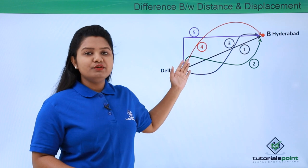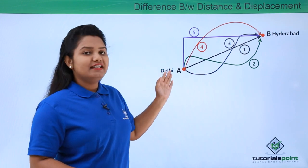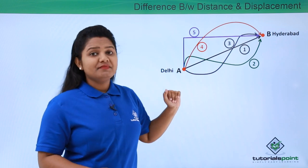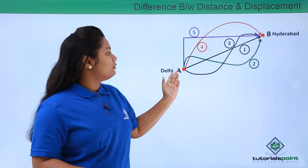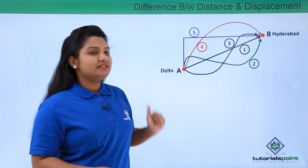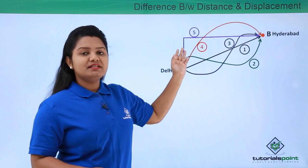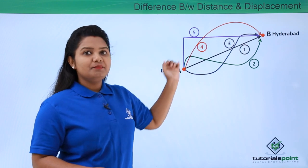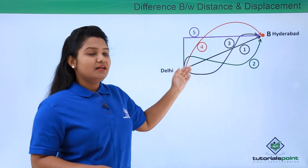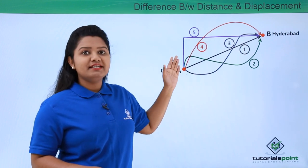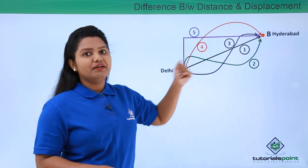This is a figure that I have shown you already in the previous video, wherein there are two points A in Delhi and B in Hyderabad. These are some of the paths that one can choose to reach point B from point A. Each path is associated with a particular distance that has to be travelled between the same two points. Among all these paths, path number one refers to the shortest distance between points A and B, since it connects straight away the two points.